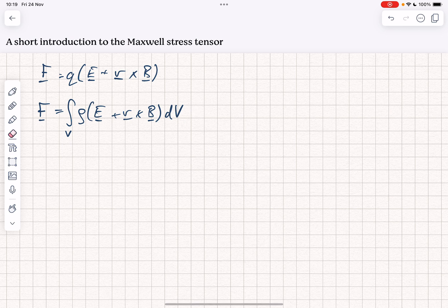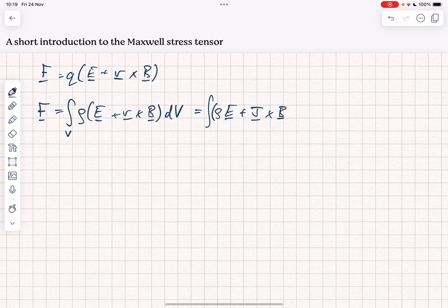We might want to broaden that out at some other time, but for now that'll do. And we're going to rewrite that by remembering that you can write this as rho E plus J cross B, where J is the current density. And at that point, we've now managed to pick up the problem of different velocities and different charges.